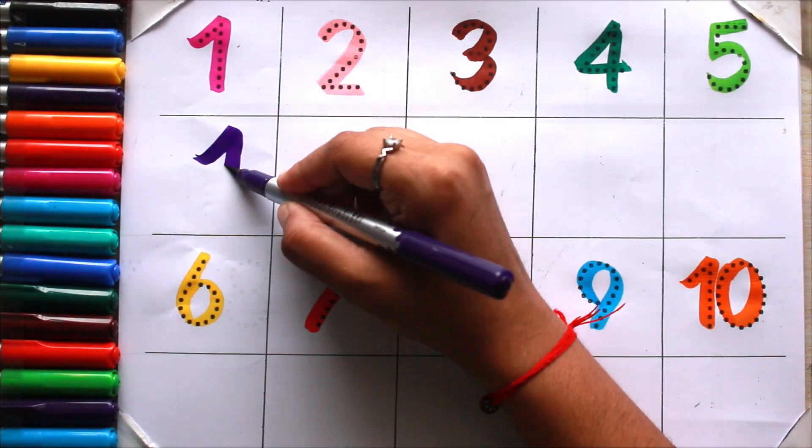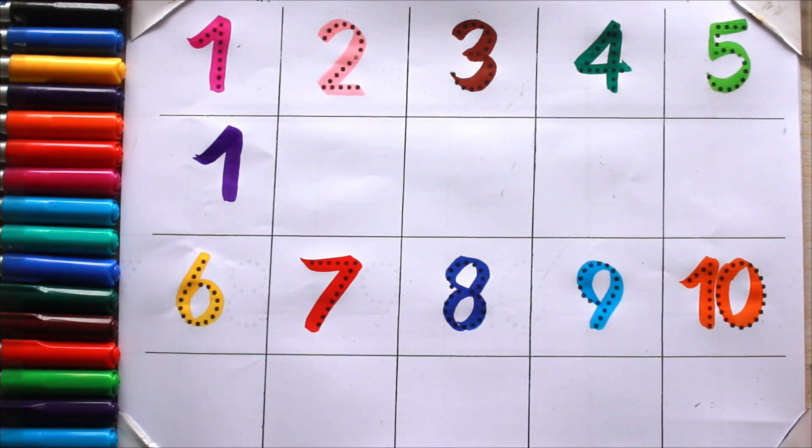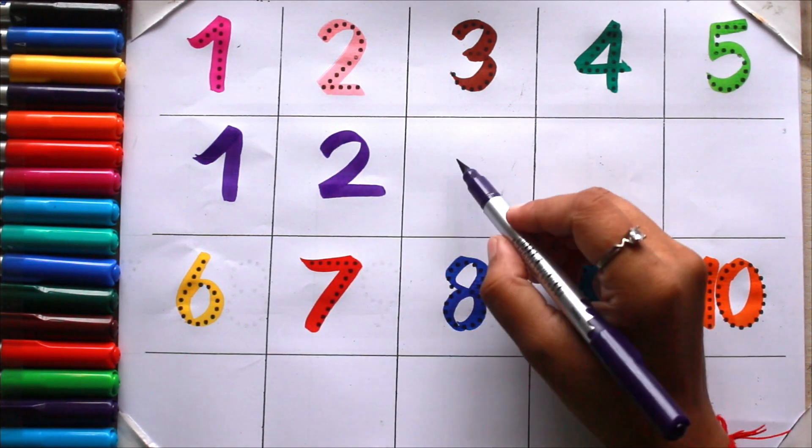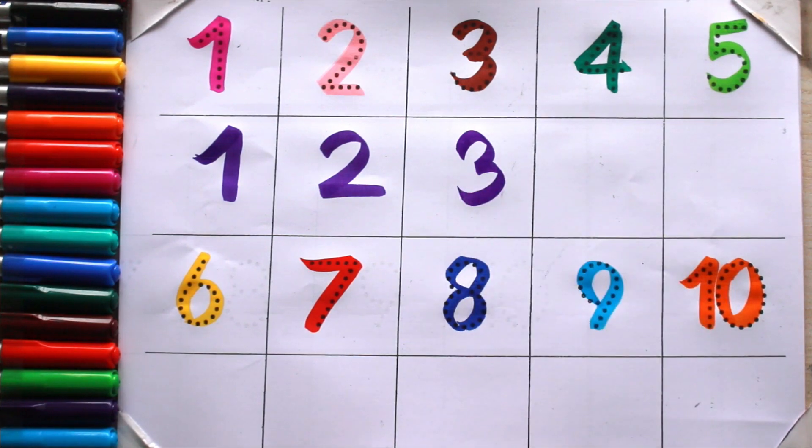Let's again. Violet color 1, O-N-E 1. 2, T-W-O 2. 3, T-H-R-E-E 3.